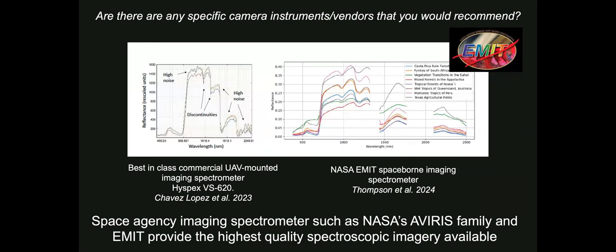Are there any specific camera instruments or vendors that you would recommend? The best quality imagery available comes from space agencies. NASA's AVIRIS Family Suite, which includes AVIRIS Classic, Next Generation, and 3, as well as the spaceborne imaging spectrometer EMIT, provide the highest quality spectroscopic imagery available. The best-in-class commercial UAV-mounted imaging spectrometer is the HiSpec VS-620, which can also be mounted on aircraft. Even so, it does still have high noise in key spectral regions and some discontinuities, in contrast to NASA's EMIT, which is smooth in key regions with no discontinuities outside of the water bands. The best quality imaging spectroscopy data available for disease detection comes from space agencies.